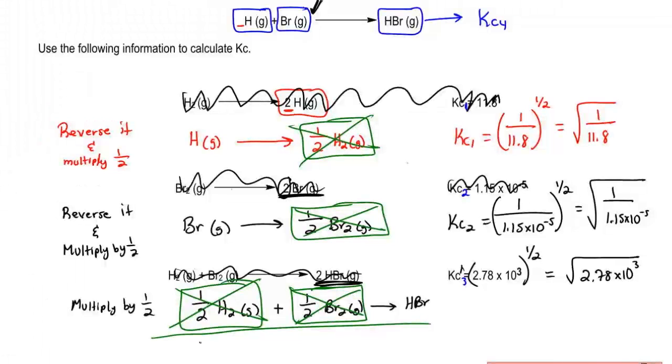Whatever doesn't get canceled out comes down. So what didn't get canceled out? H gas didn't get canceled out. Br gas didn't get canceled out. Look, the equation we just isolated matches up with the equation above.